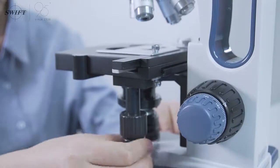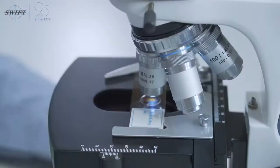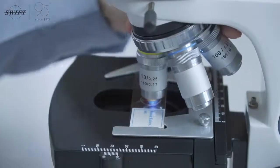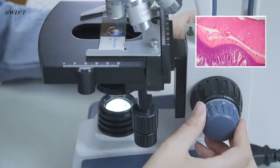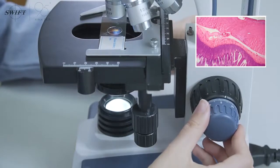Move the target slide to be observed to the center of the view. First use the scanning objective lens to find the target, and use the coarse and fine focusing mechanism to adjust the image under the microscope to be clear.